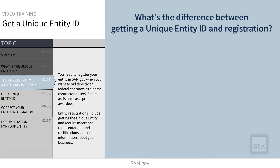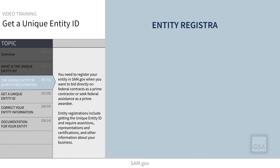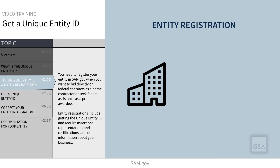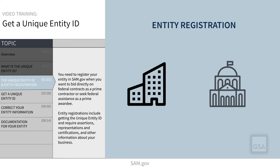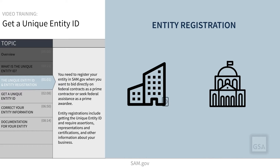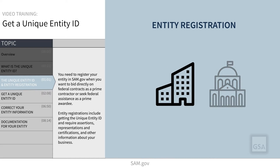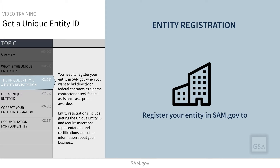What's the difference between only getting a Unique Entity ID and registering your entity? An Entity Registration allows your organization the opportunity to receive a contract or assistance directly from the federal government, not from another contractor or awardee. You must register your entity in SAM.gov when you want to bid on federal contracts as a prime contractor, or seek federal assistance as a prime awardee.